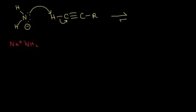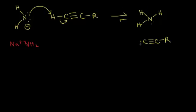If NH₂⁻ picks up an H⁺, that forms NH₃ — nitrogen with three hydrogens and one lone pair. So when sodium amide functions as a base, it forms ammonia as its product. Our other product: we had carbon triple-bonded to another carbon with an R group, and the lone pair of electrons on that terminal carbon gives it a −1 formal charge. We form a carbanion, also called an alkynide anion.